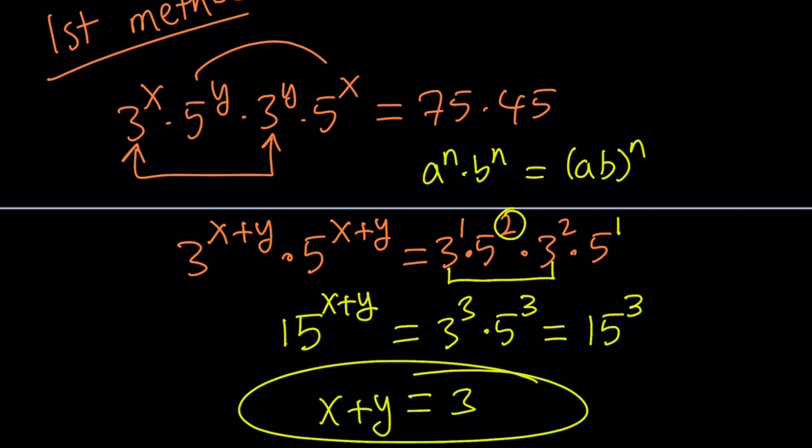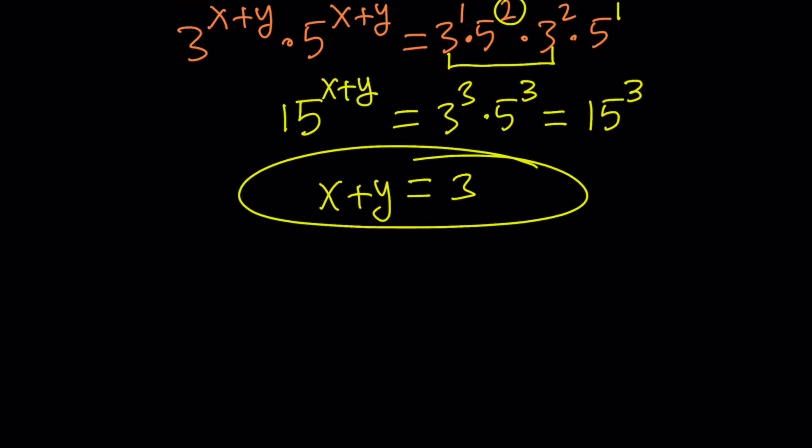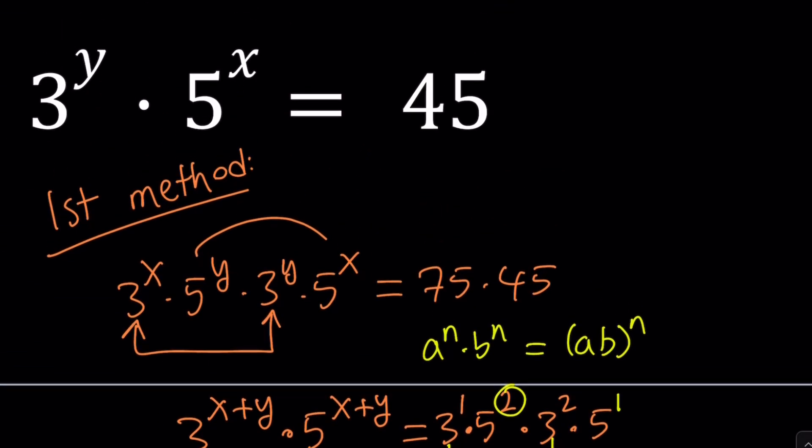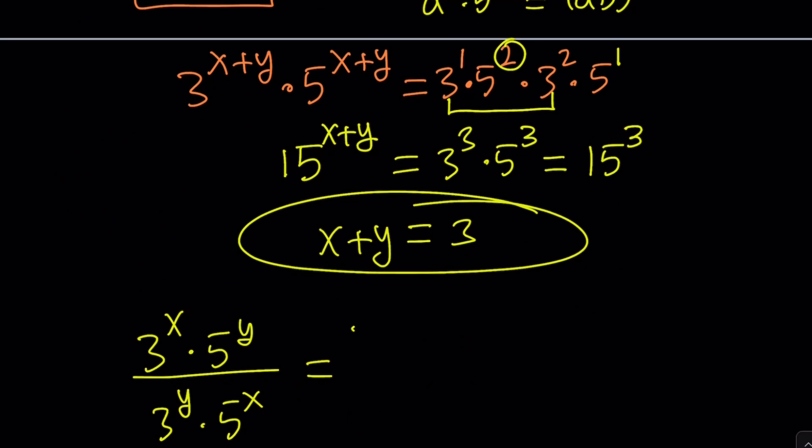If you said division, yes, you got it. So we're going to divide these equations. Let's divide 3 to the x times 5 to the y by 3 to the power y times 5 to the x. So in the numerator, that's 75, and the denominator is 45.